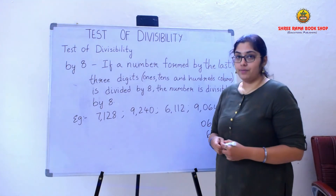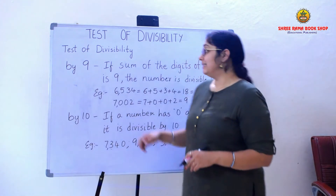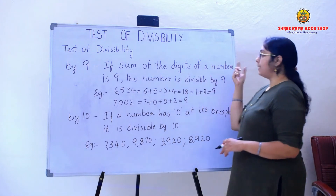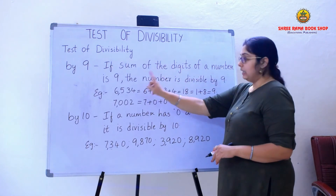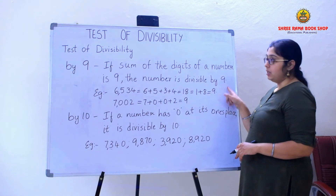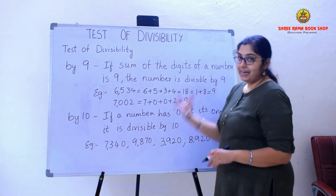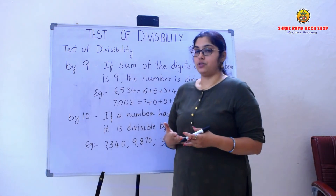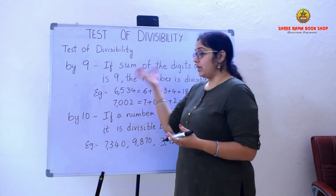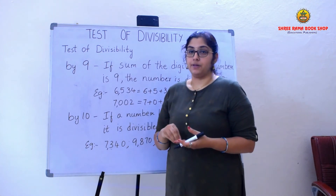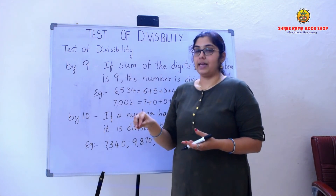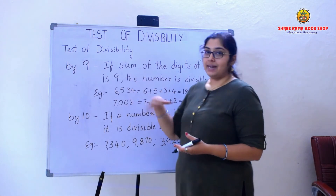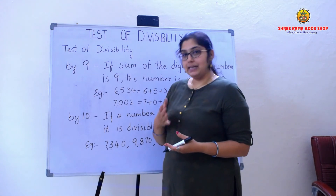Now we will learn the divisibility rule of 9. If the sum of the digits of a number is 9, the number is divisible by 9. So for any number with 1, 2, 3, 4, 5, or any number of digits, if you add all the digits and the sum is 9, then we can say that the number is divisible by 9.